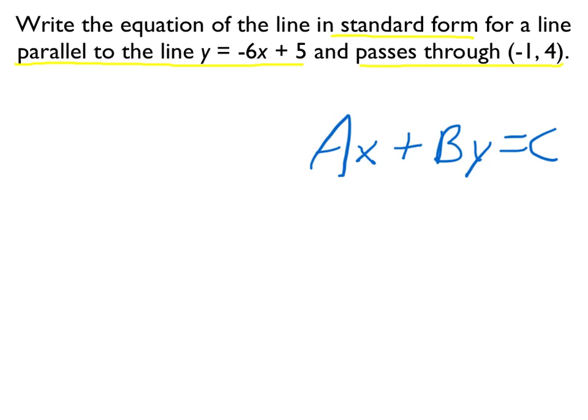Now, in order to use point-slope form, we need a point and we need a slope. Well, we already know the point that this line will pass through. That's negative 1, 4.